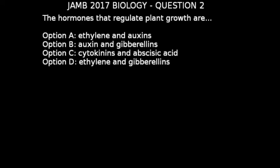JAM 2017 Biology Question 2: The hormones that regulate plant growth are — Option A: ethylene and auxins; Option B: auxin and gibberellins; Option C: cytokinins and abscisic acid; Option D: ethylene and gibberellins.